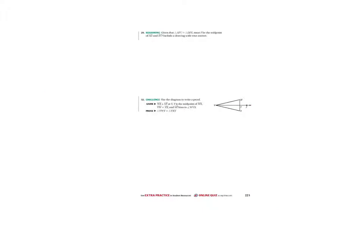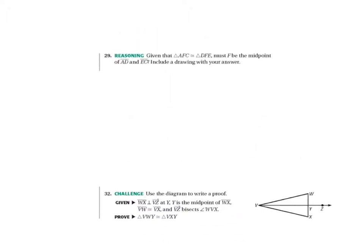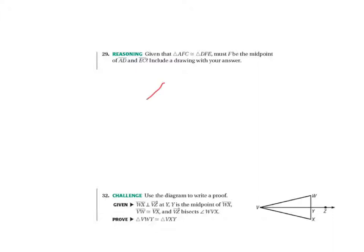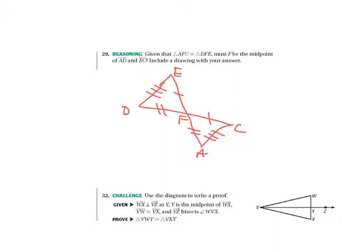Number 29 wants us to come up with a drawing showing that F does not have to be the midpoint of A-D, N, E, C — include a drawing. It does not need to be the midpoint. I could draw something like this and put in the letters A, F, C with D and E up here. To show it's not the midpoint, I can show that those segments aren't equal — for example, one side could have two tick marks and the other three. This would be a way to show that F doesn't have to be the midpoint; if it were, the two sides would have been congruent.